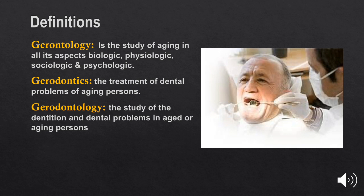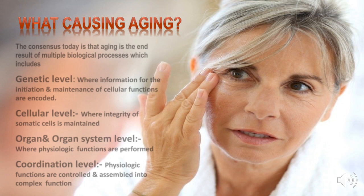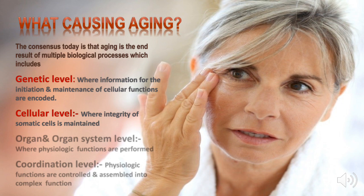What causes aging? The consensus today is that aging is the end result of multiple biological processes, which include: the genetic level, where information for the initiation and maintenance of cellular functions are encoded; the cellular level, where integrity of somatic cells is maintained; the organ and organ system level, where physiologic functions are performed; and the coordination level, where physiologic functions are controlled and assembled into complex function.